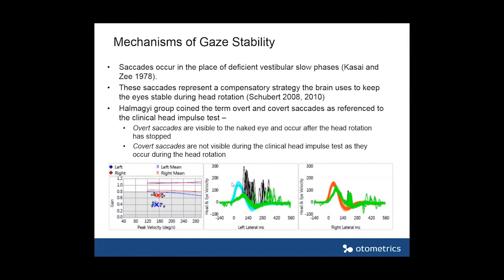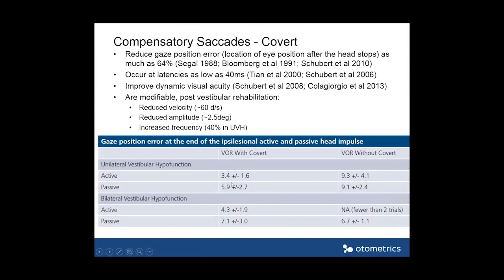I'm going to talk a little bit more about these compensatory saccades. We've measured them. We had exceptional equipment — we had to put contact lenses in people's eyes, and we still do that. It's the most precise way to measure eye movement, but you can imagine it's not done clinically and the sample sizes are very low.